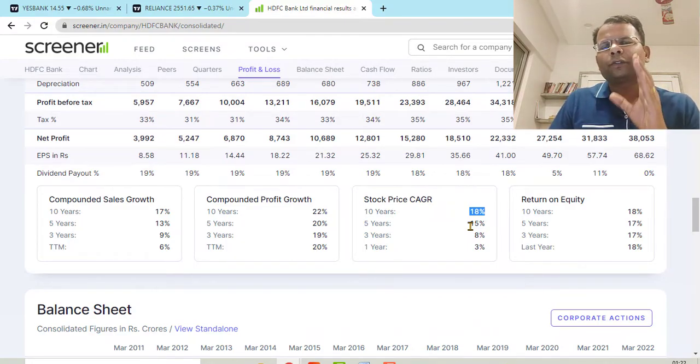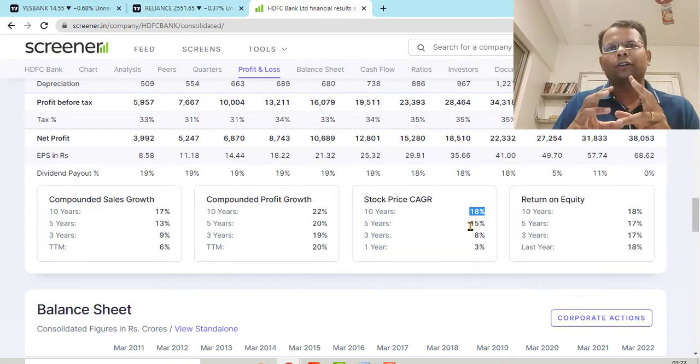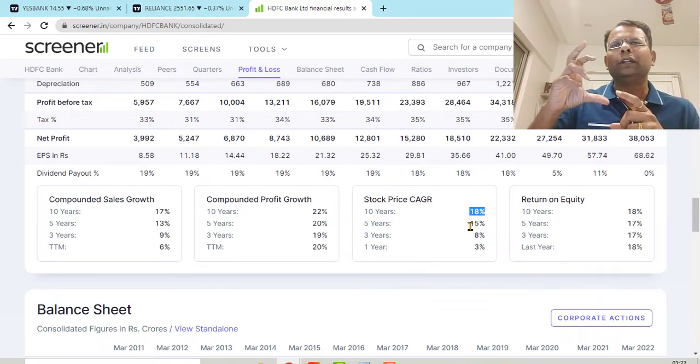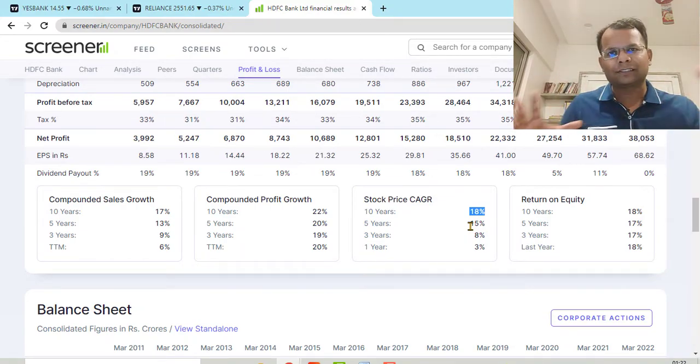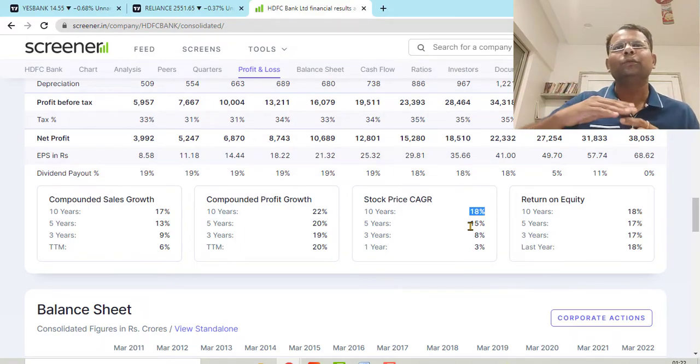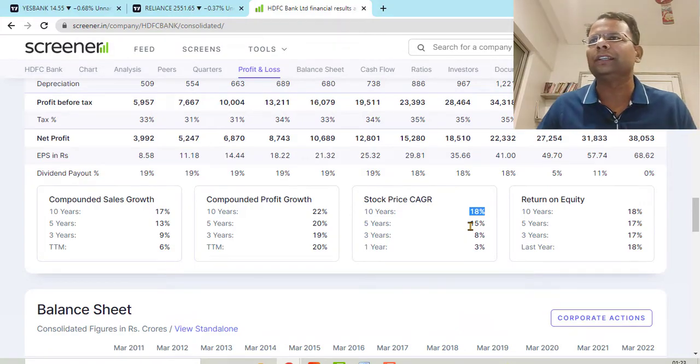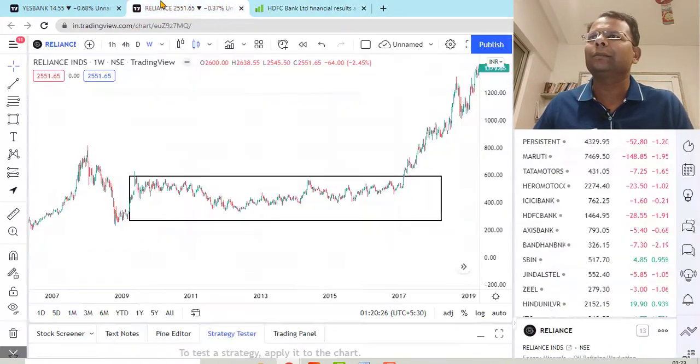So for most of these top companies, the good companies will be able to give you on an average CAGR of around 15 to 20 percent. Now my question is, are there any periods of time when these stocks actually give more than or equal to 20 percent move while they were in these last 10 years?